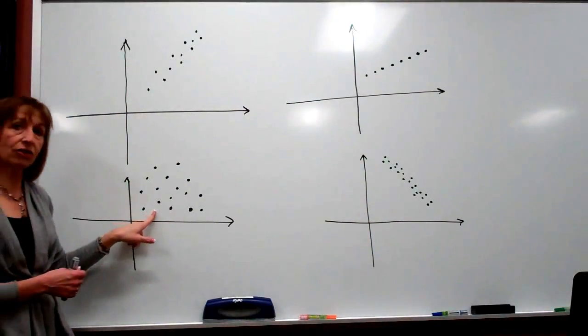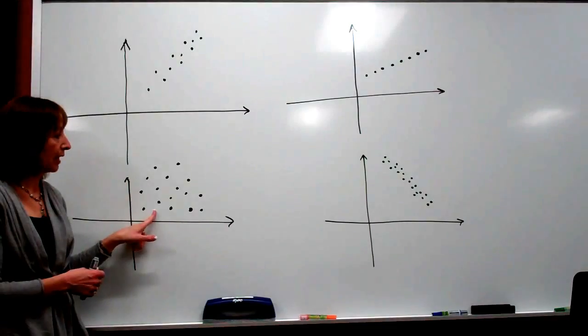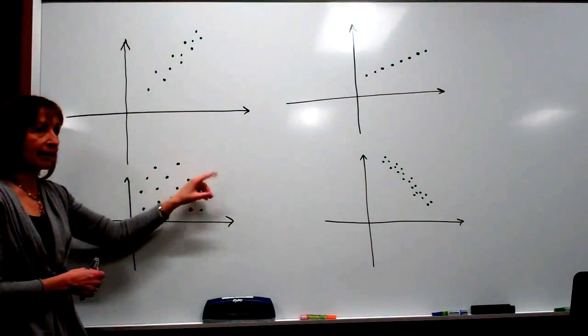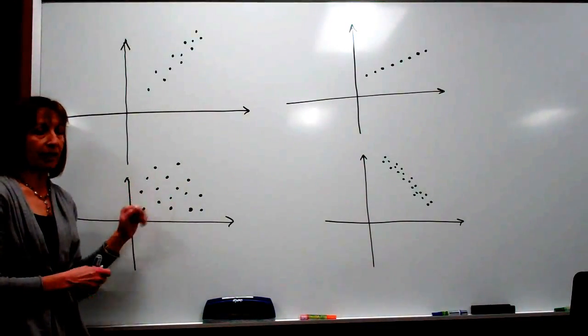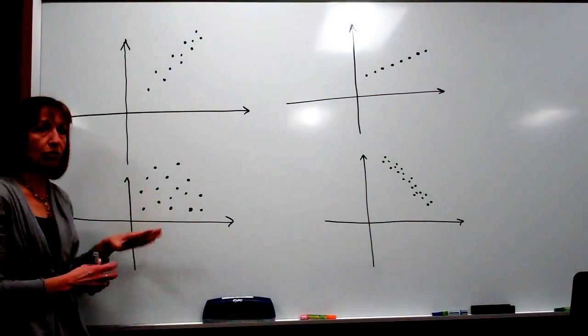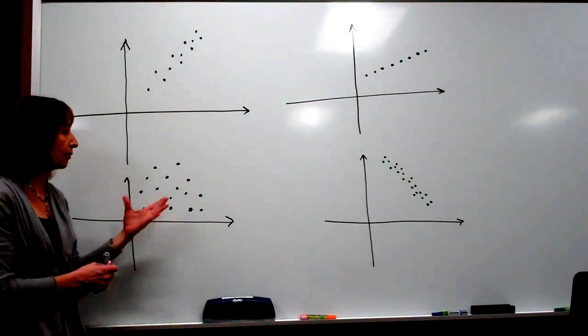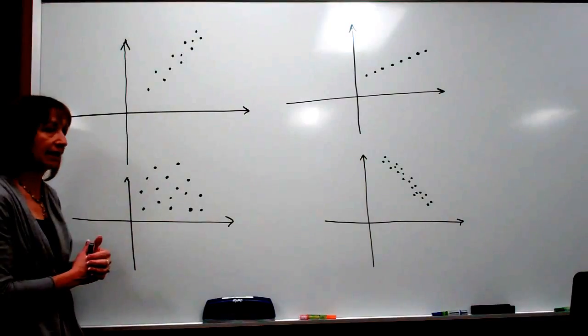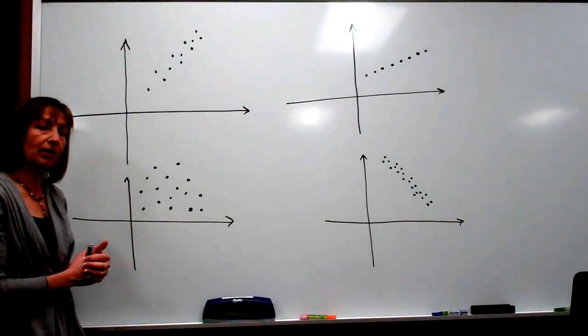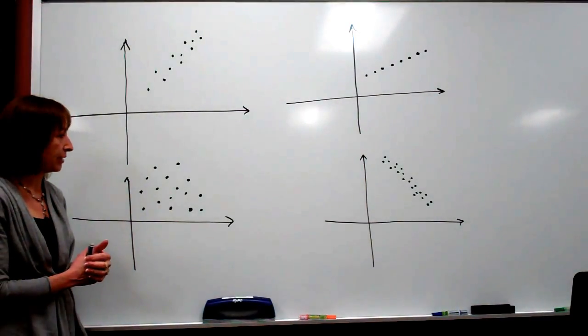In this third scatter plot, the dots are all over the place. There's no correlation between the variables that have been plotted with this scatter diagram.